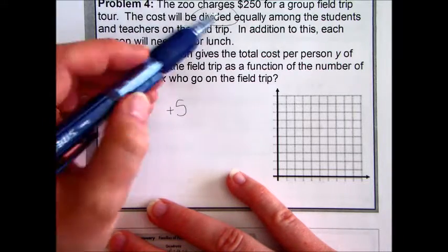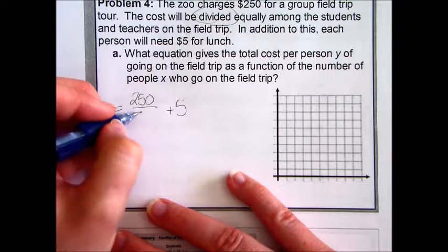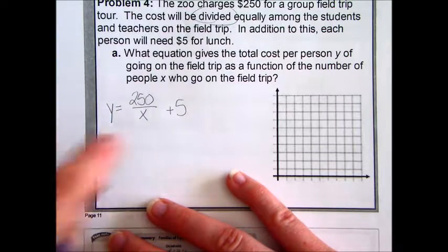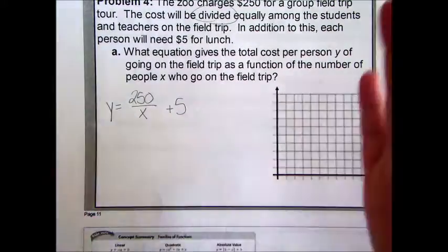We share the $250 cost. So, it says $250 is going to be divided equally among how many people go. And then, no matter what, you have to pay $5 for lunch. We're all done.